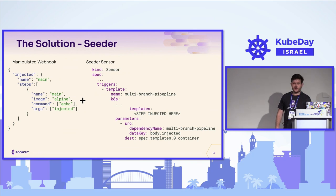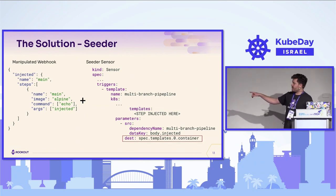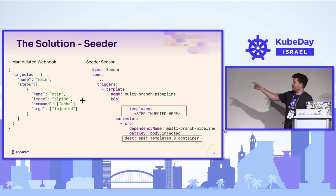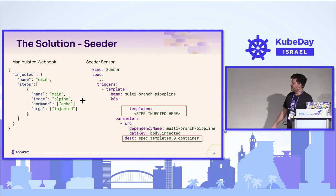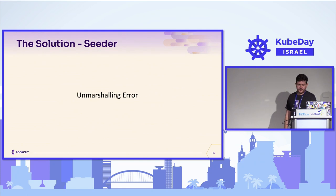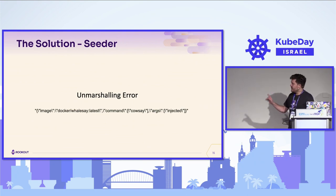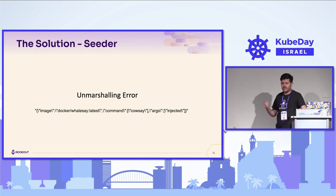I started with the last part — the seeder. I wanted to check if it worked, so I sent a small webhook. I wanted to take a parameter — the destination — and debug the YAML into the templates so it would execute. This is the workflow that would be created; that's what we expected at the end. But we got an unmarshalling error. I decided to debug this sensor, and the easiest way for that was to use Rookout. This is the string I got with the unmarshalling error — it's definitely an escaping problem with backslashes.